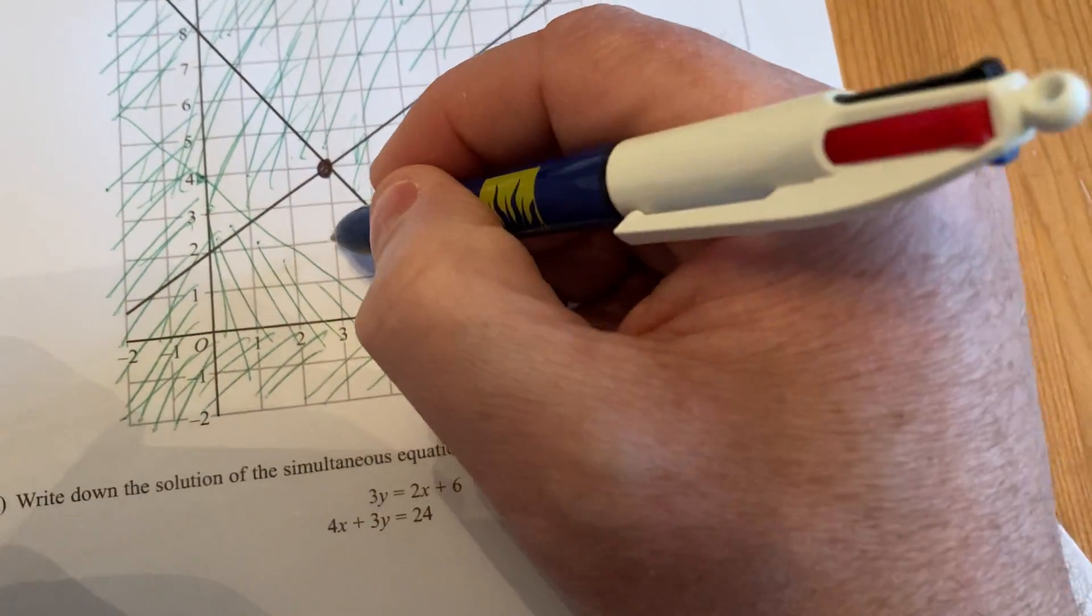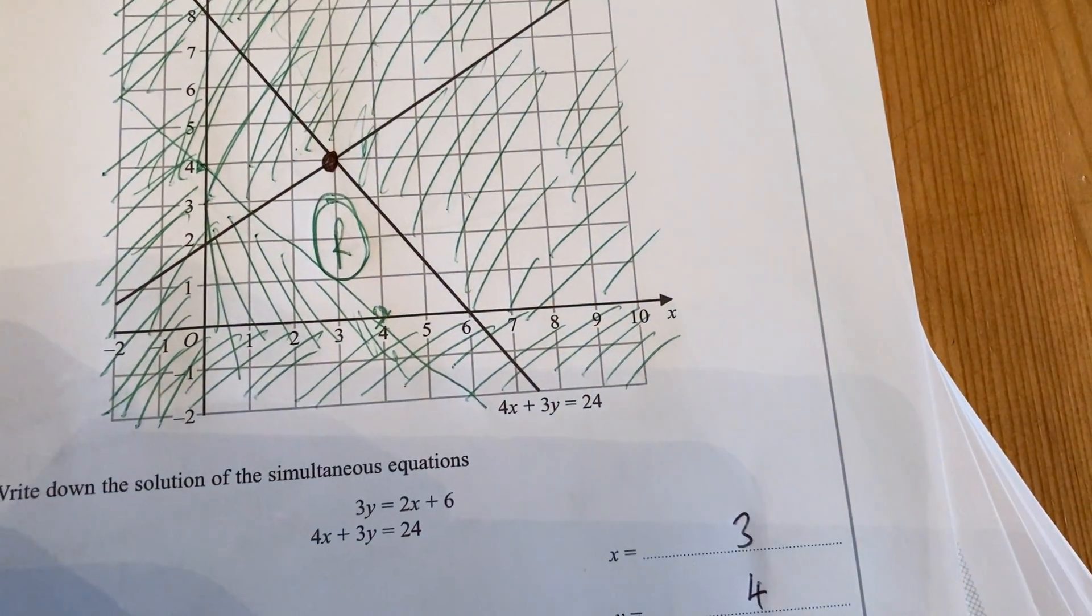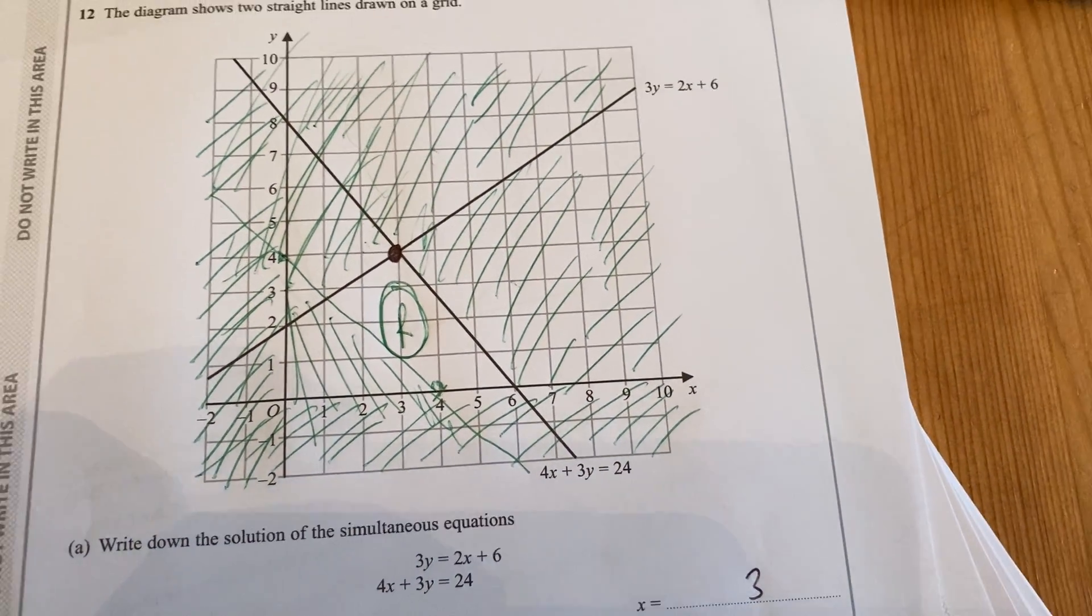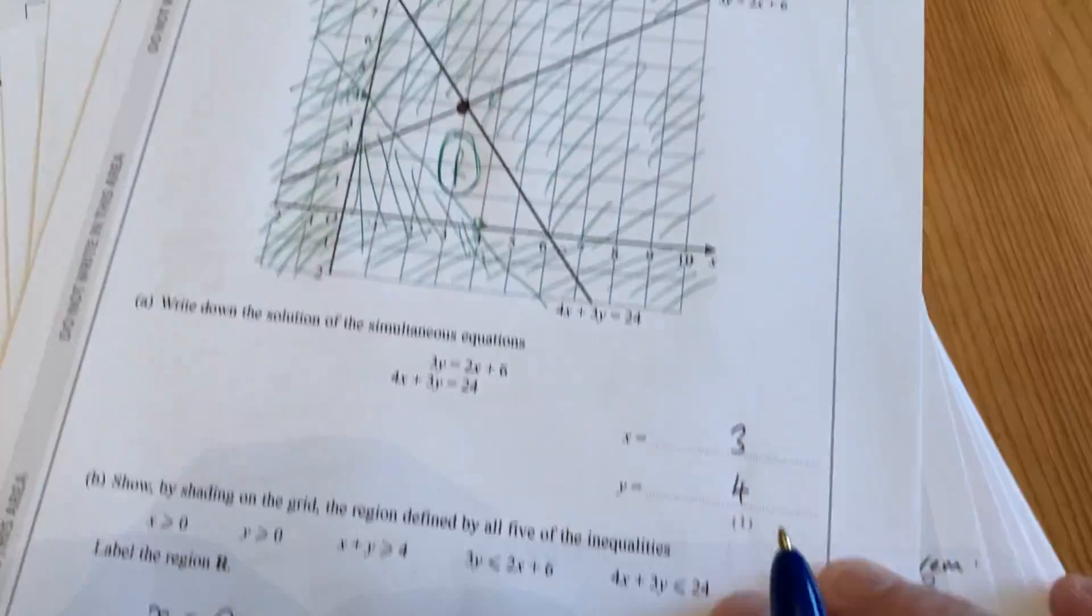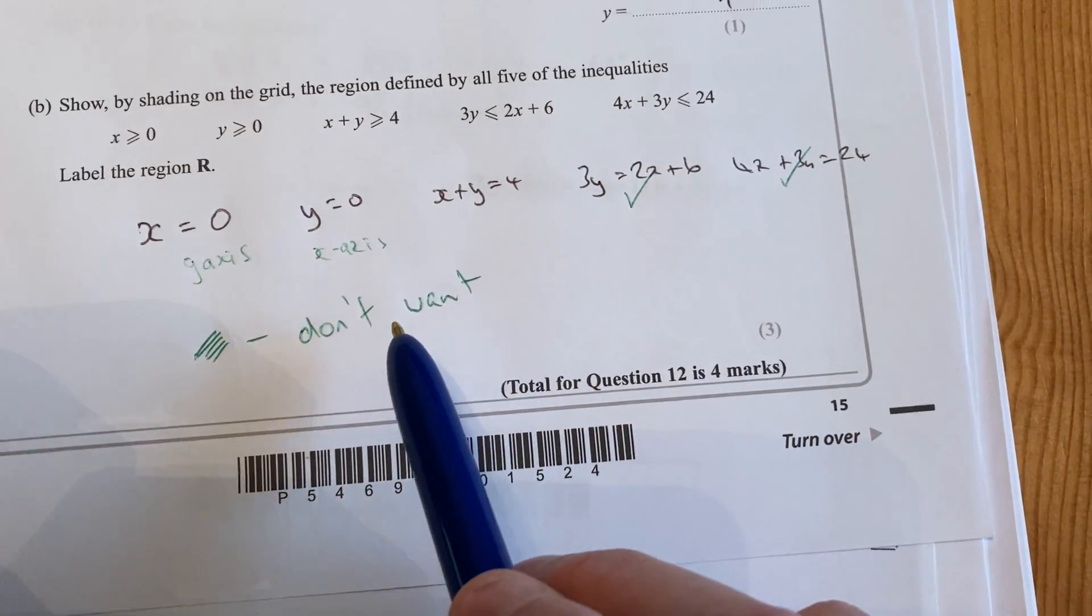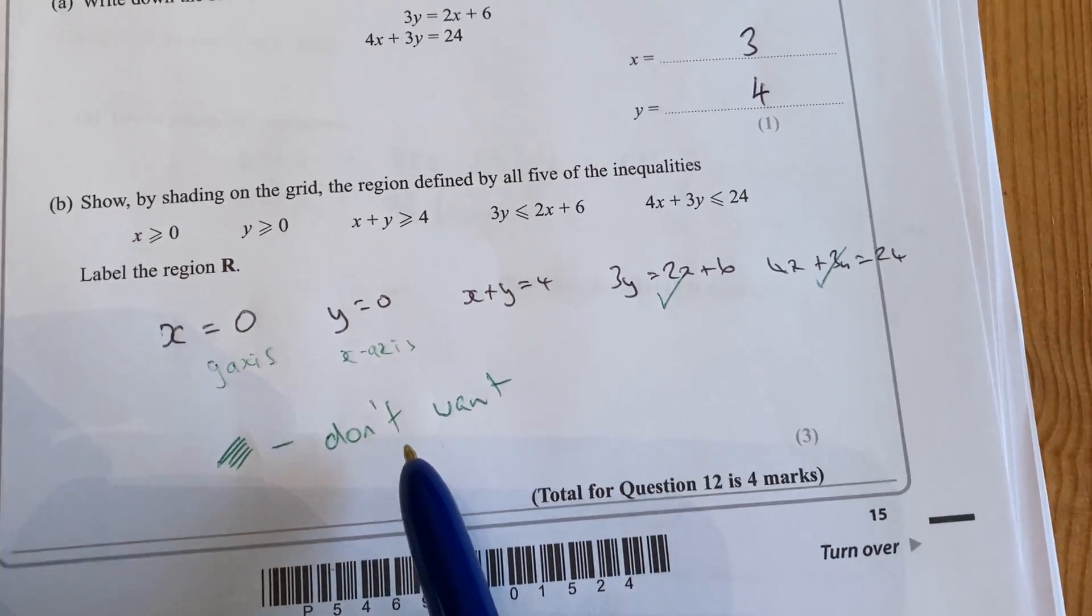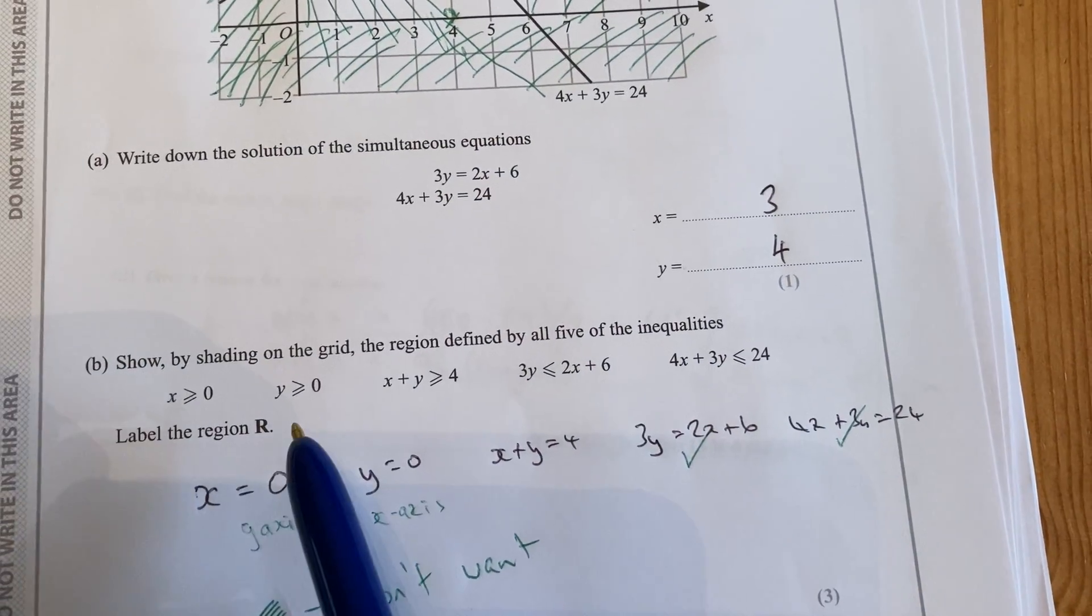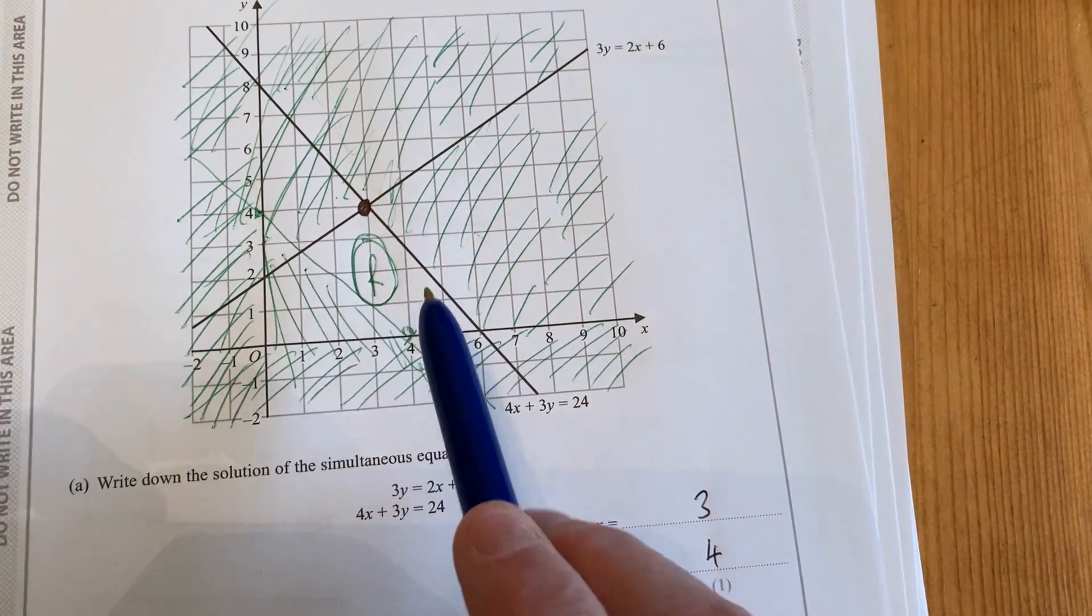And I'm left, what I'm left with is this is the region R in there. Alternatively, you can shade in the bits that you do want. It becomes a bit harder in that case because you probably need lots of different colours. But again, do make a note down here of whether you're shading in what you do want or what you don't want. So label the region R where all those inequalities are satisfied, region R.